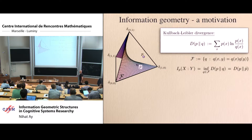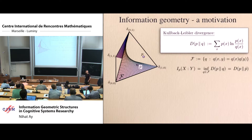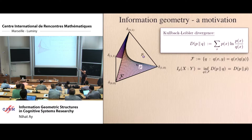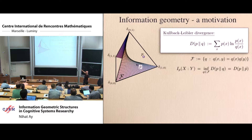We can consider a subfamily of this simplex — the family of all distributions that factorize, meaning the random variables x and y are independent: q(x,y) = q(x)·q(y). For an arbitrary probability distribution, I wanted to study projection onto this manifold using a distance measure. I ended up with the Kullback-Leibler divergence. I started with many other distance measures and they didn't work well; the KL divergence gives the projection as the product of the marginals, which is very natural.